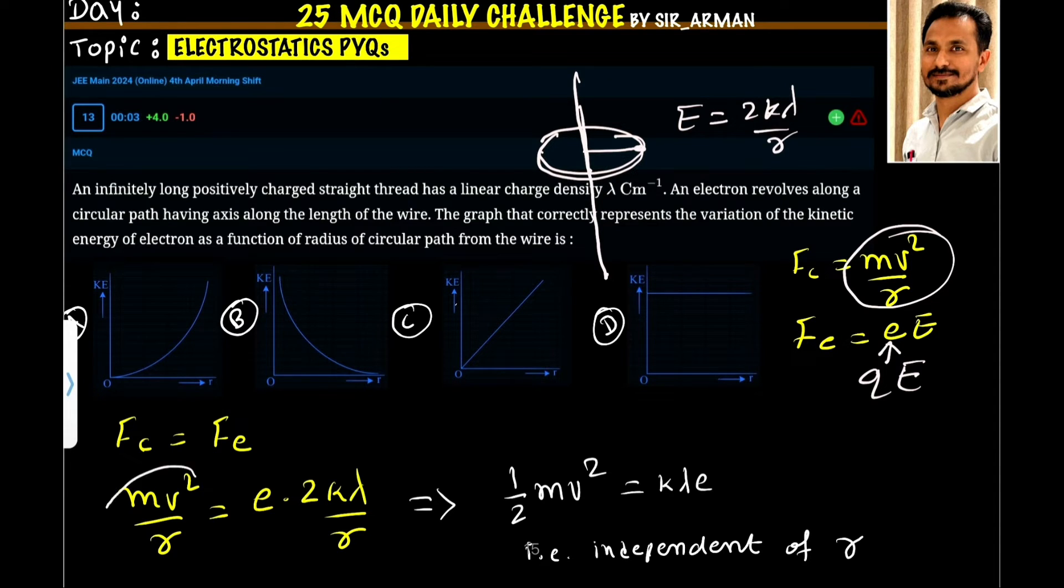So here mv square by r equals to e. So here I have placed e and here e for electric field. This becomes 2k lambda by r. Now, what is asked here? We have to relate the kinetic energy of the revolving electron with the radius.